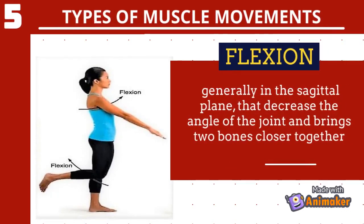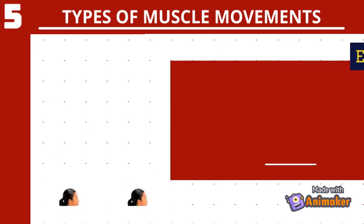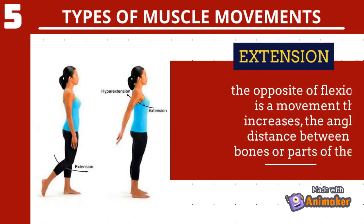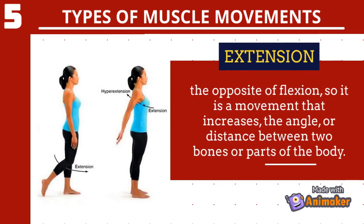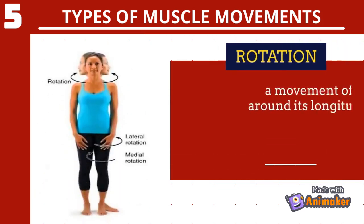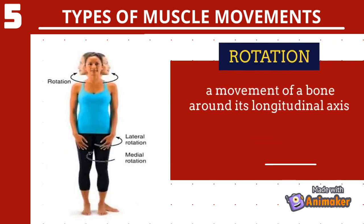There are five types of muscle movements. The first type is flexion — a movement generally in the sagittal plane that decreases the angle of the joint and brings two bones closer together. The second type is extension, the opposite of flexion, which is a movement that increases the angle or distance between two bones or parts of the body.